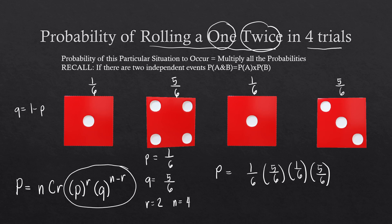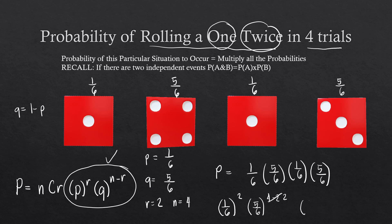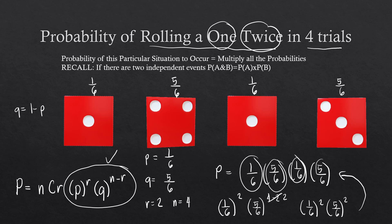Substituting the values: P is 1/6 raised to the power of 2, and Q is 5/6 raised to 4 minus 2, which is also 2. So we get (1/6)² × (5/6)². Notice this matches our manual calculation. However, the N combination R part of the formula accounts for the number of possibilities that this particular situation — rolling a 1 twice — will happen.